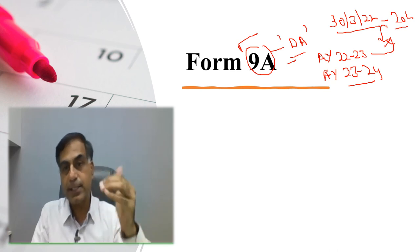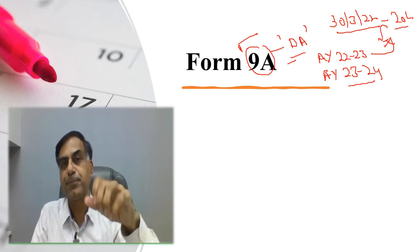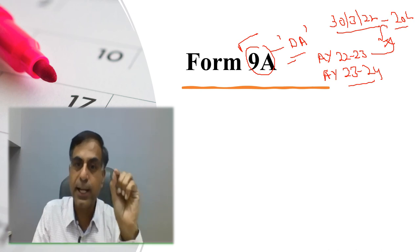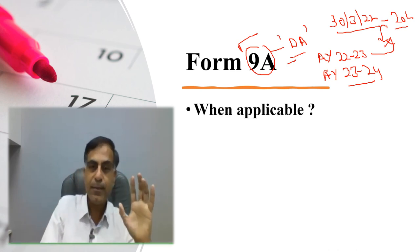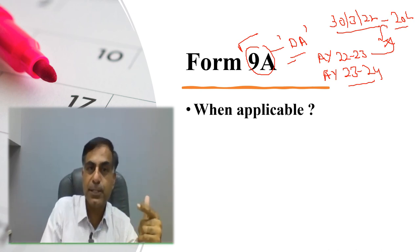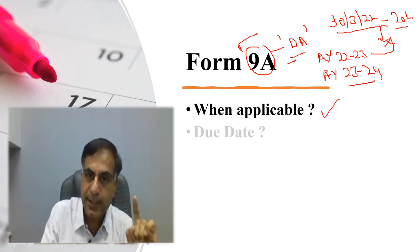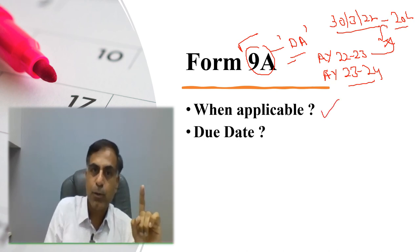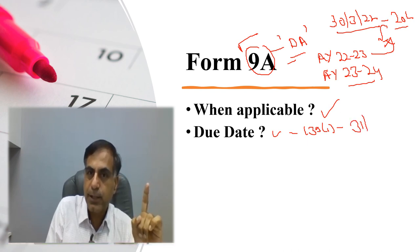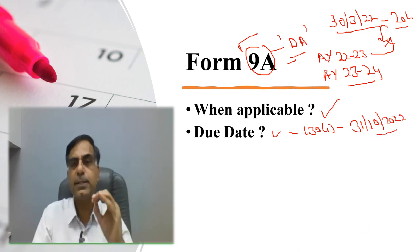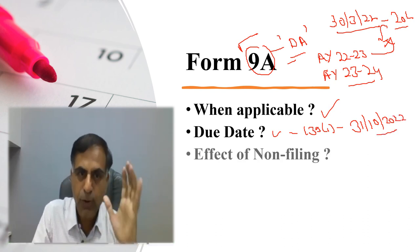So if a trust is wishing to avail the benefit in such a fashion, then it has to apply online in form 9A. So when this particular form is applicable, this form 9A is applicable when you are interested in claiming deemed application. What is its due date? Due date is of filing ITR under section 139-1. That is say for assessment year 22-23, it is going to be 31st of October 2022. And here I assume that the trust is liable to get its books audited.